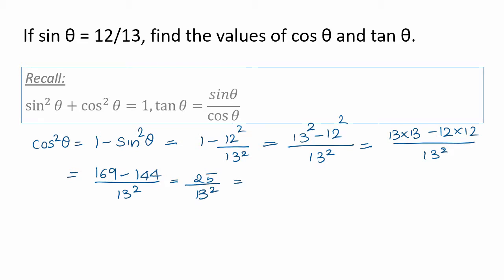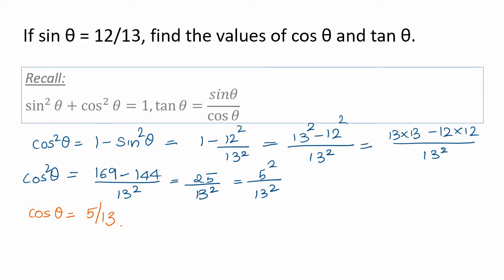25 divided by 13 square — notice that 25 is 5 square. So cos square theta equals 5 square by 13 square, which means cos theta equals 5 by 13. We found cos theta. Next, tan theta is easy: it is sin theta by cos theta. Sin theta is 12 by 13, and cos theta is 5 by 13, which means tan theta equals 12 by 5.